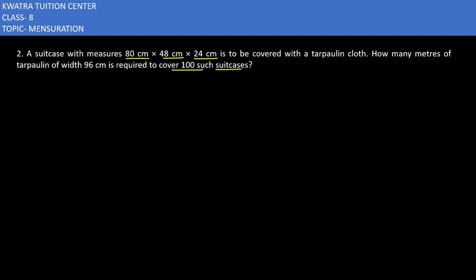So suitcase is which figure? Is this a cuboid? How do you know? Length is given, breadth and height is given. To cover it is a tarpaulin and its width is 96 cm and length is not given.